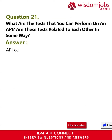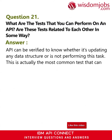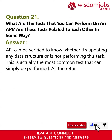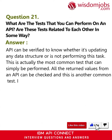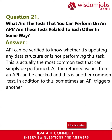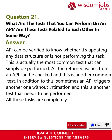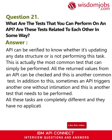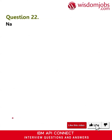Question 21: What are the tests that you can perform on an API, and are these tests related to each other in some way? Answer: An API can be verified to know whether it's updating any data structure or not — this is the most common test. All returned values from an API can be checked, which is another common test. Additionally, sometimes an API triggers another one without intimation, which is another test that needs to be performed. All these tasks are completely different and have no dependencies on each other, though a few steps are common among them.